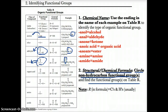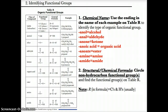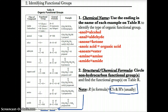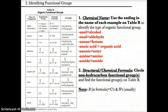One more thing to note, shown at the bottom of table R: R usually represents a bonded atom or group of atoms. Specifically, the R in the formula will typically represent C's and H's. That's how to identify functional groups — using chemical names by the endings, and structural or chemical formulas based on which non-hydrocarbon functional group is attached.